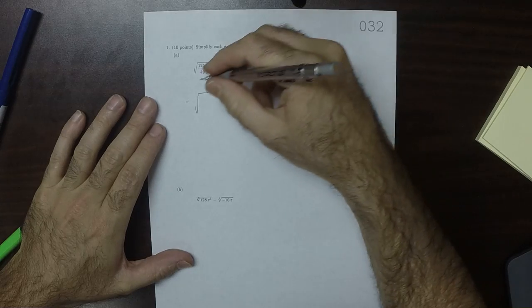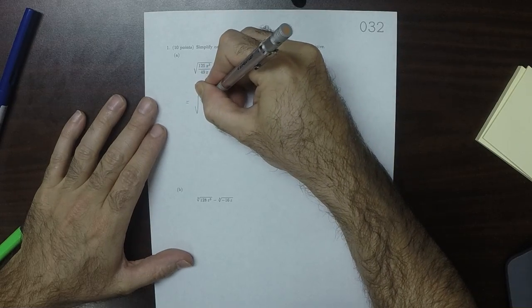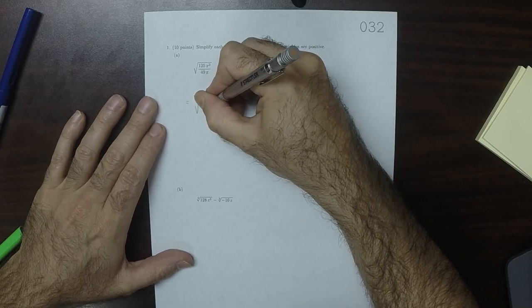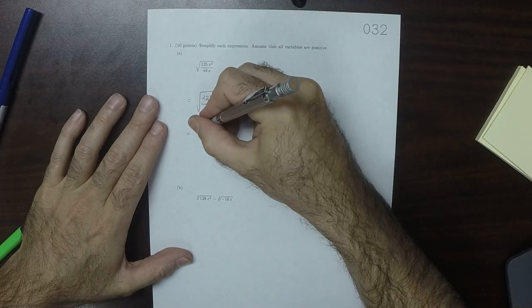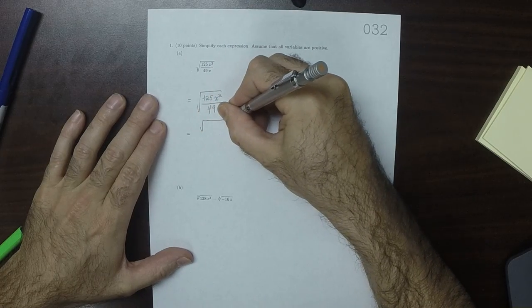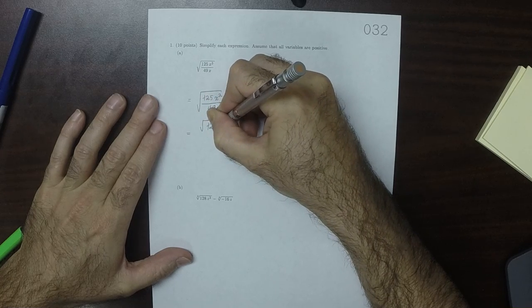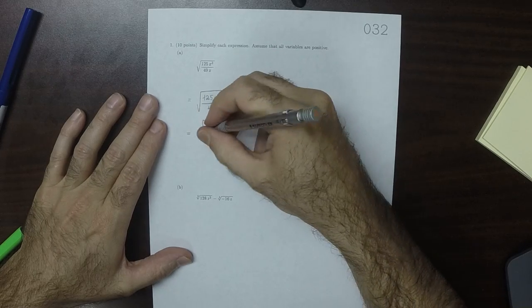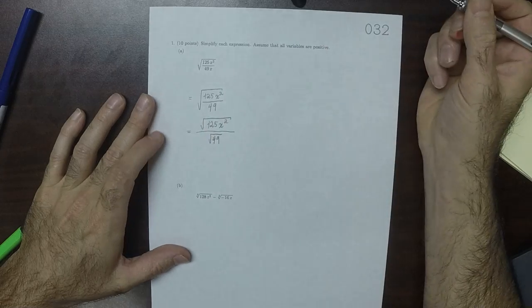Since we're assuming all variables are positive, we can cancel the x's to get 125 x squared in the numerator, and then divide by 49, then we can use the radical rule to split that radical across the quotient.